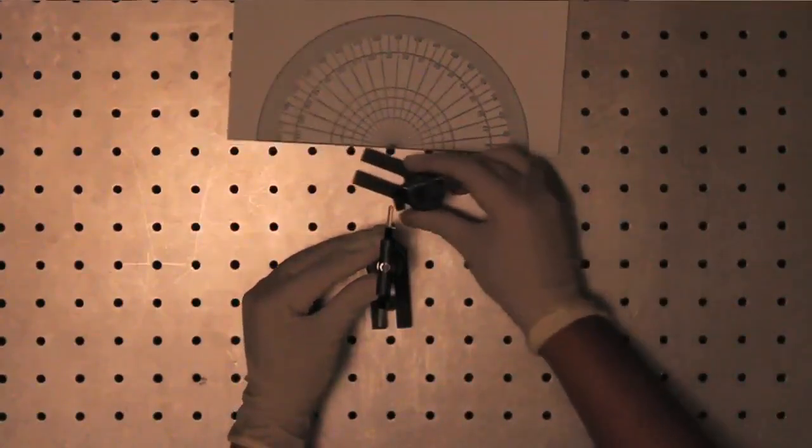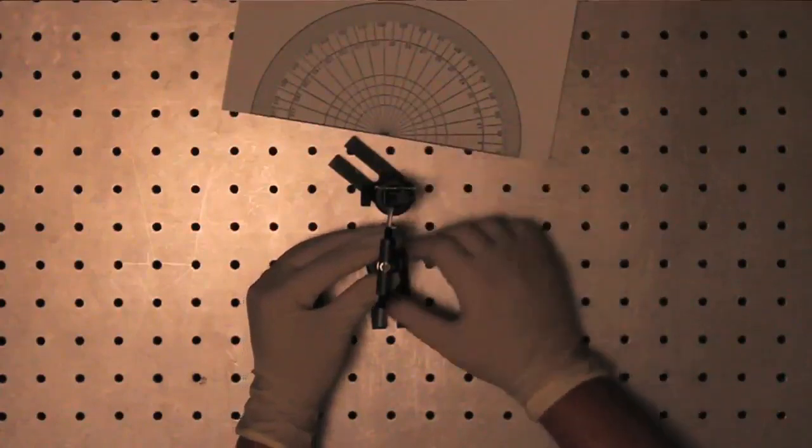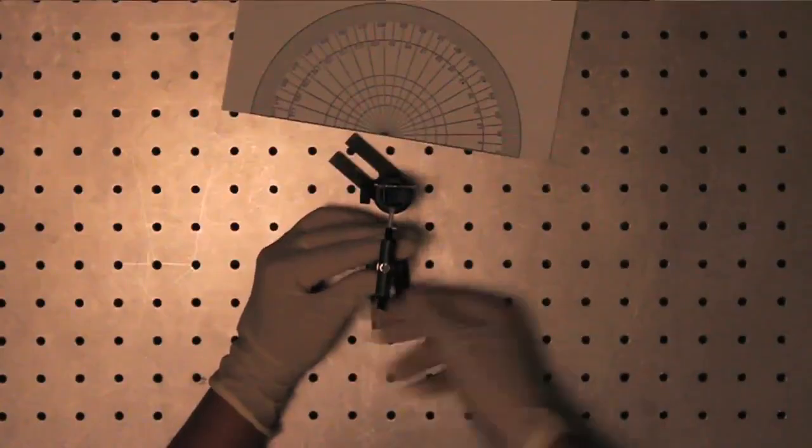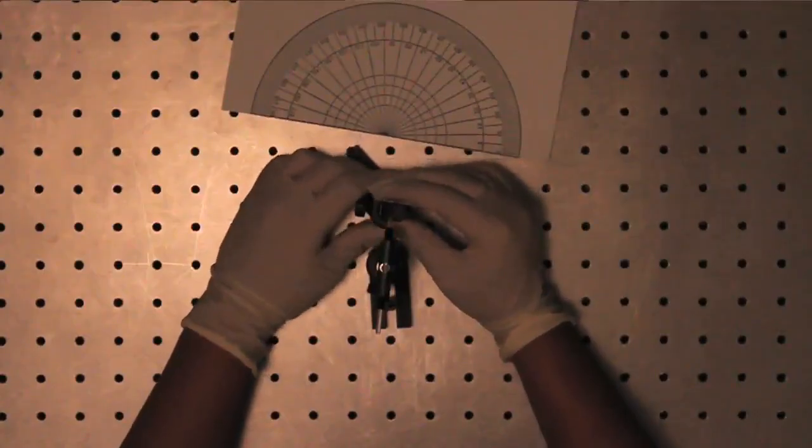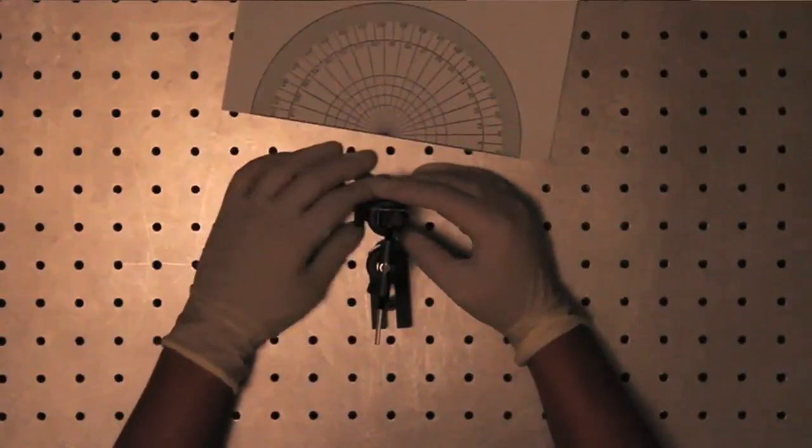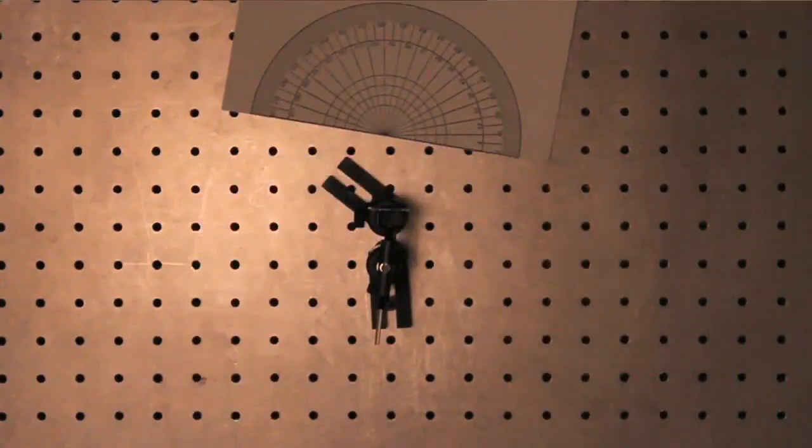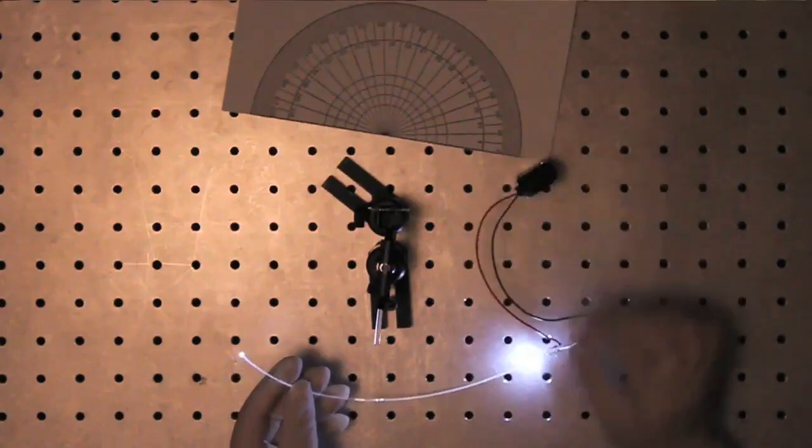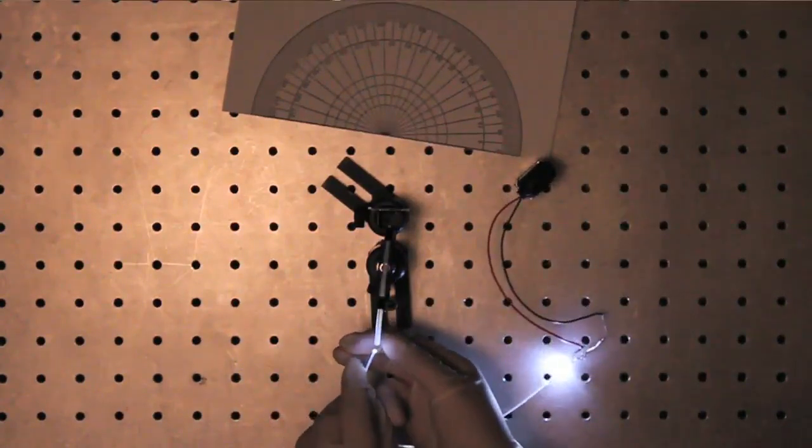Now carefully place the waveguide flush against the piece of glass glued to a fiber V-groove holder. This effectively seals the end of the waveguide. Couple the LED coupled fiber into the end of the waveguide by inserting it into the Teflon tube.